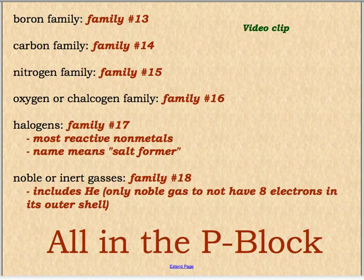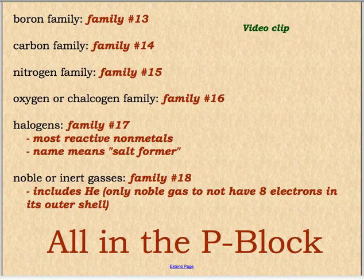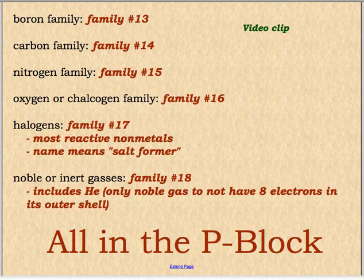If you're in the same family, you have the same number of valence electrons, but you don't necessarily act exactly the same. The last two families: we have the halogens, which are number 17 — the really reactive non-metals, and their name means salt former. And then our very last one, number 18, are the noble or inert gases. They're very unreactive, and you can read about them in your book.